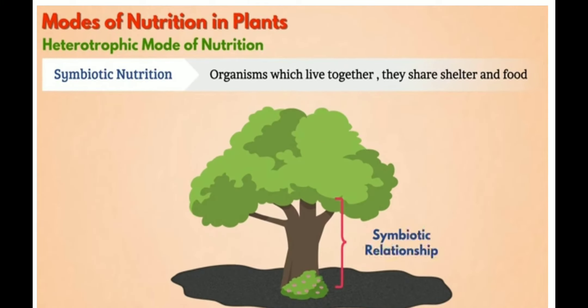Here is another example of symbiotic nutrition. Some fungi grow around the roots of certain plants. These plants supply nutrients to the fungi, and in return, fungi supply minerals and water to the plants. This is also one example of a symbiotic relationship.